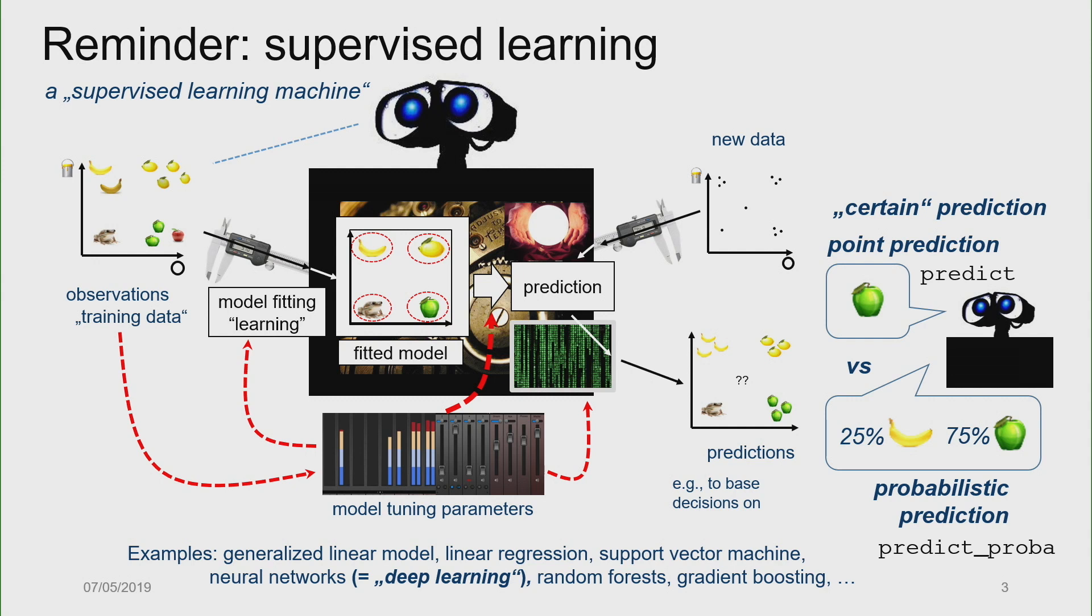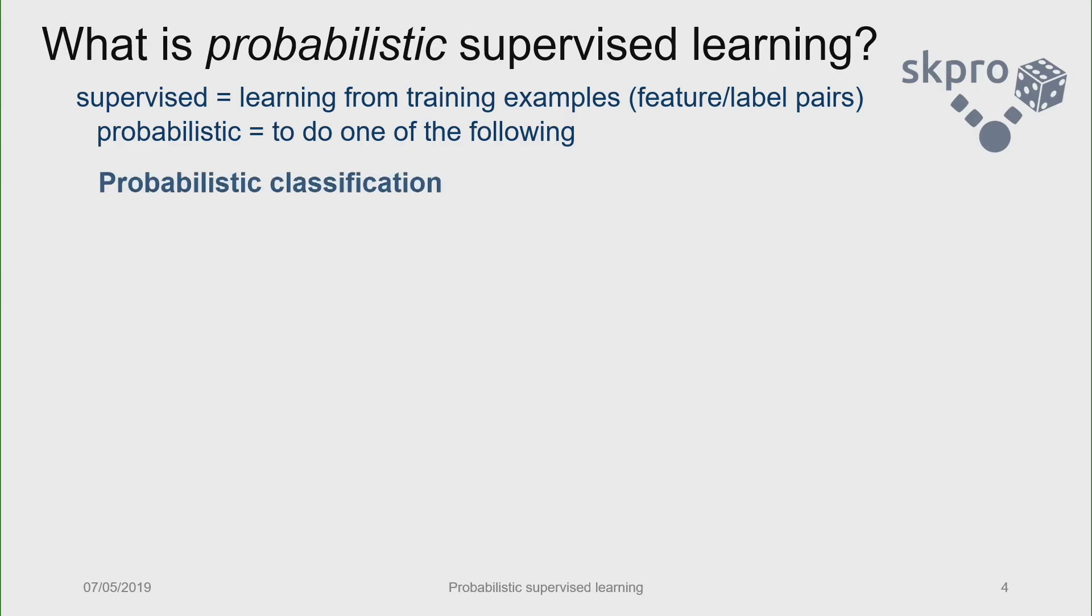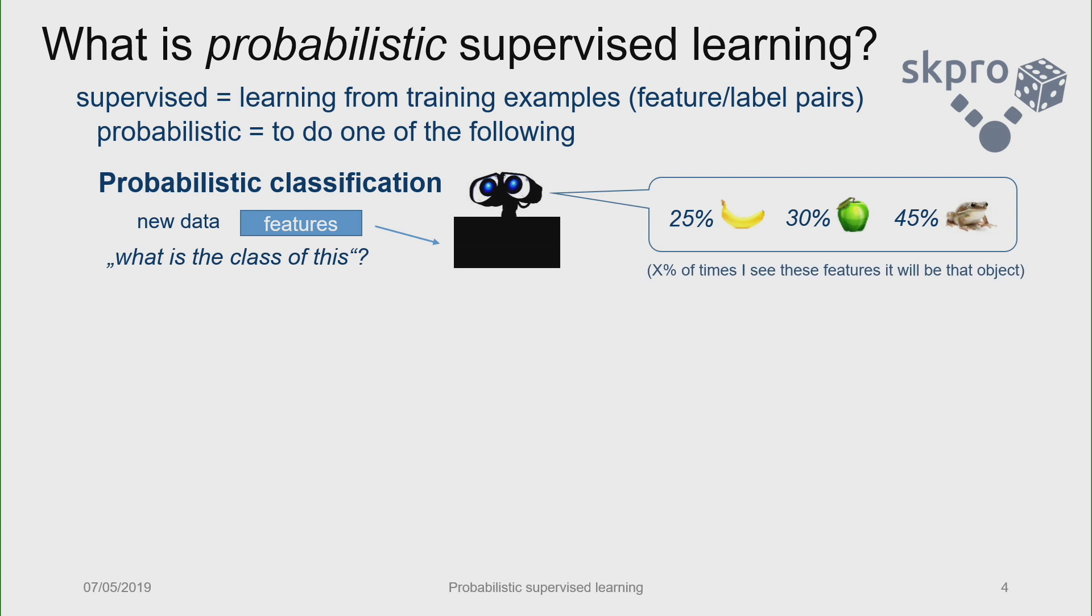So what we're going to talk about is predict_proba-like things. Obtaining this kind of prediction not only in classification, but in a regression sense, which SKPro means to address. So more generally, you might be familiar with classification, which is maybe the most frequently used case in practice. Scikit-learn more or less covers this already with the predict_proba interface.